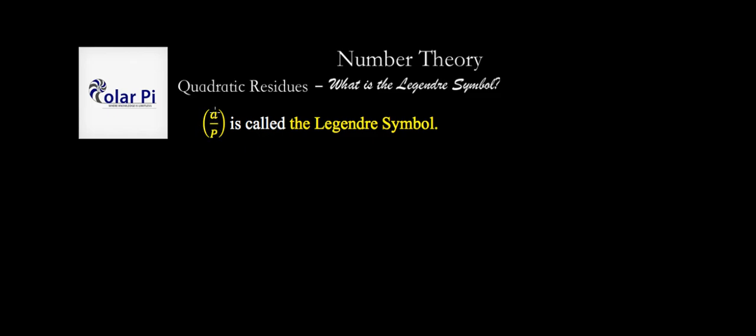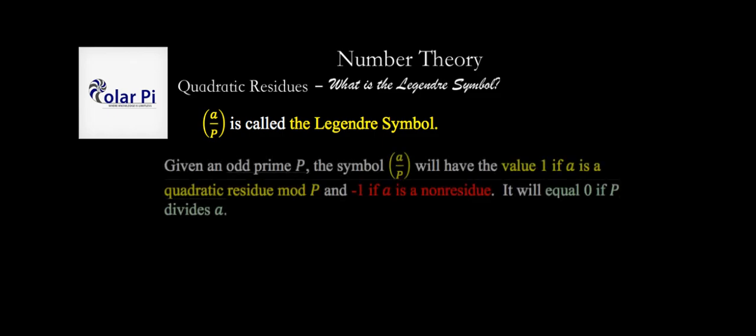We say a over p, the symbol a over p, will have the value one if a is a quadratic residue mod p, and it will have the value negative one if a is a quadratic non-residue mod p. It will equal zero if p divides a.